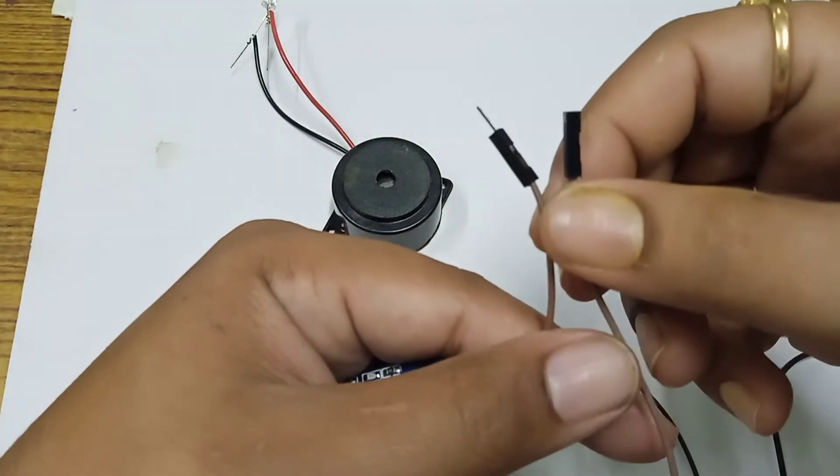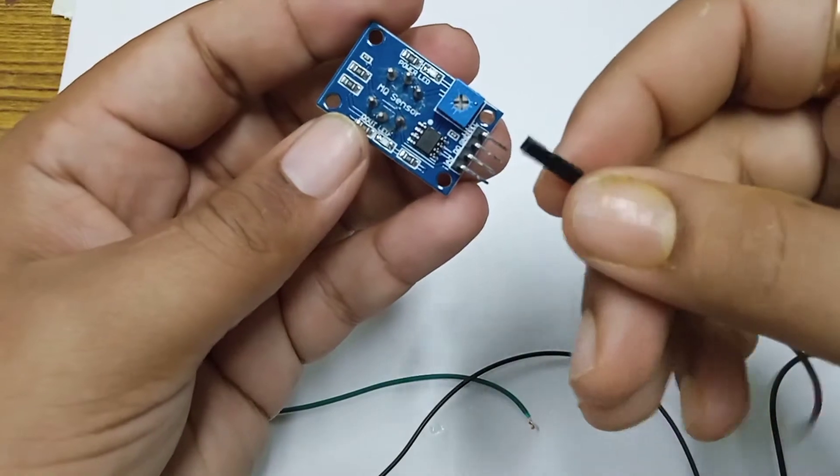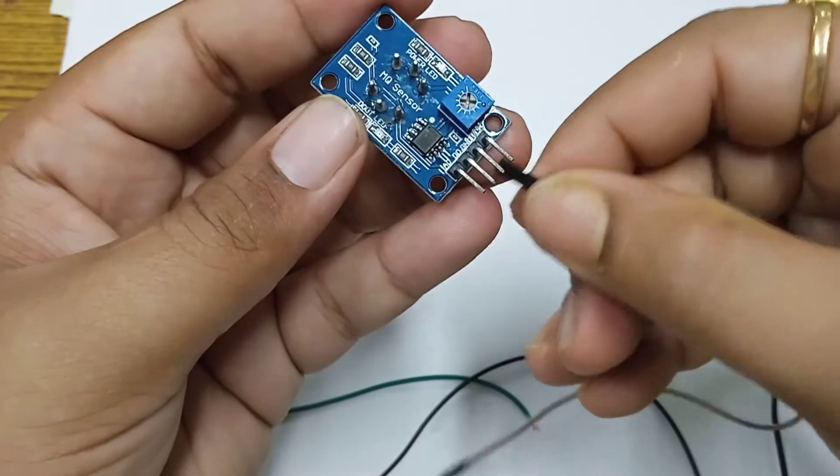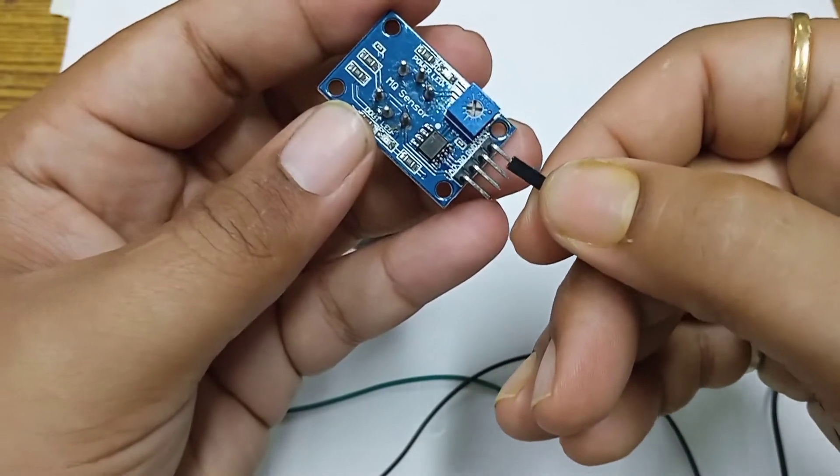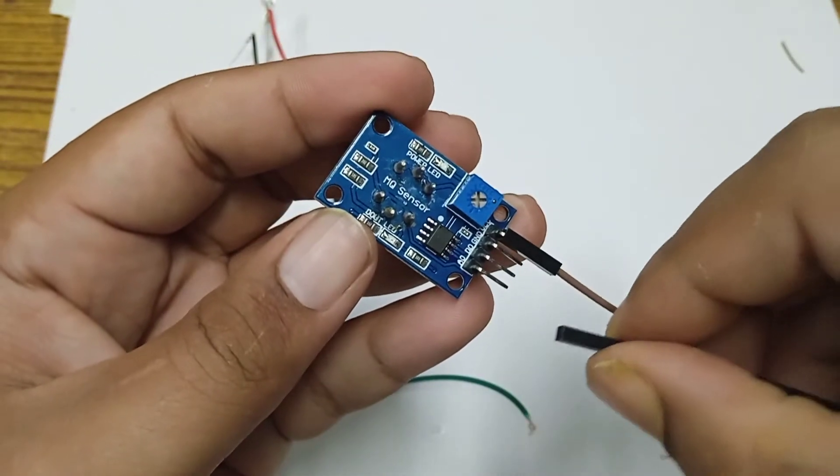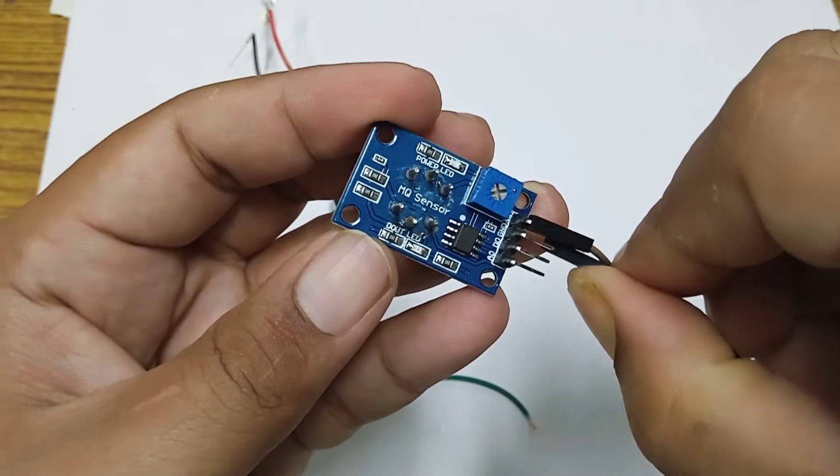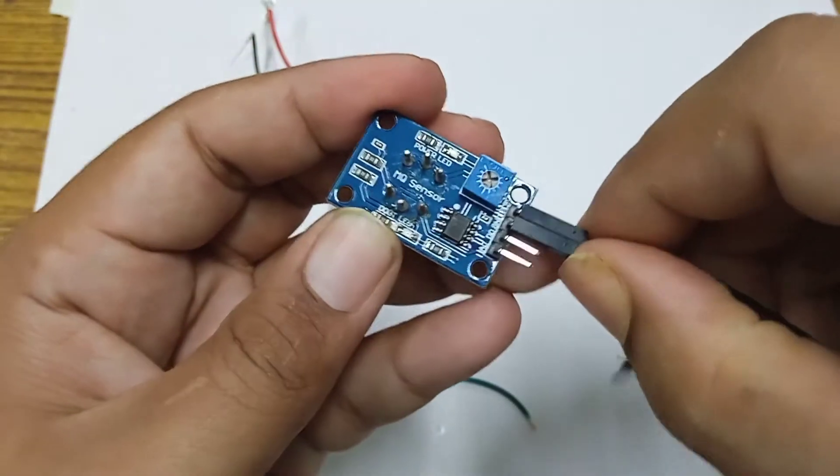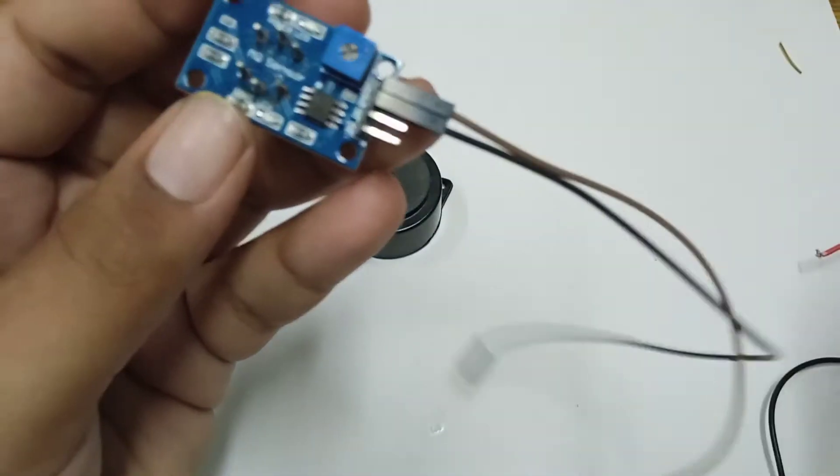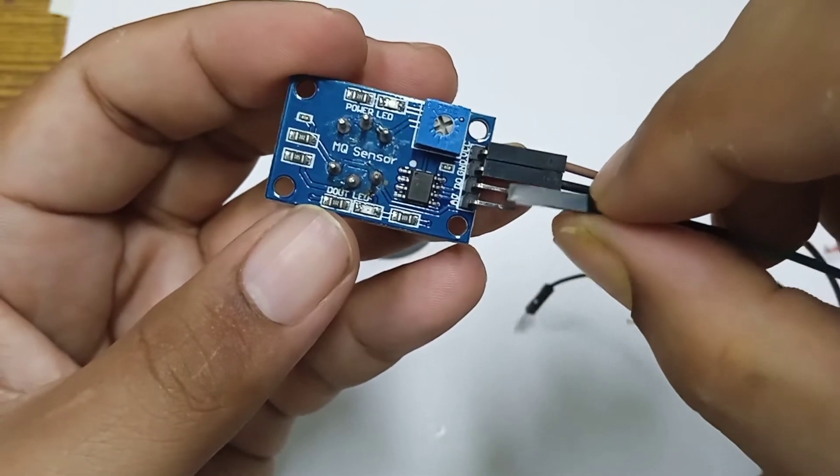We have taken this male to female jumper wire and first we connect the wire to the VCC terminal. Then we connect the next one to the ground terminal. Preferably use black color for ground, and then we connect another wire to the D0 terminal.